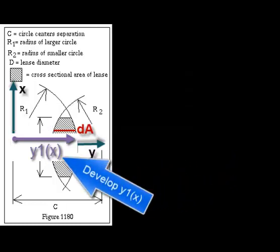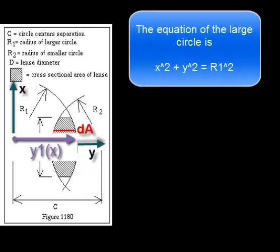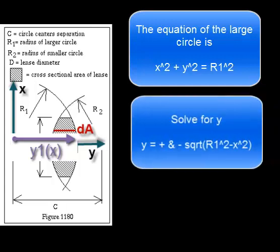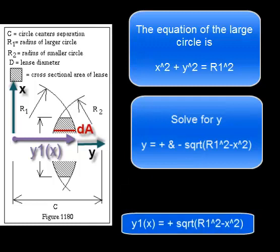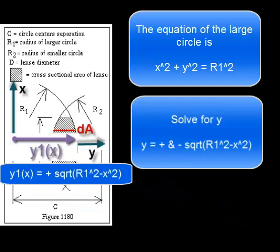Develop an expression for Y1, a function of x. The equation of the large circle is x squared plus y squared equals R1 squared. Solve that equation for y and we have two roots, one positive and one negative. Select the positive root. Now we have Y1, a function of x.